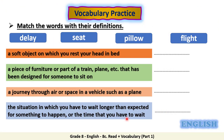Now let's have one more exercise. Match the words with their definitions. We have four words: Delay, Seat, Pillow, and Flight. Read each definition and write the correct word in front of it. You have four minutes, and when you finish, please play the video again to check your answers.